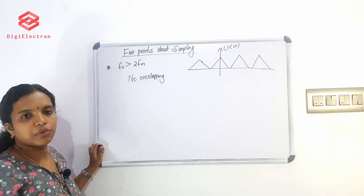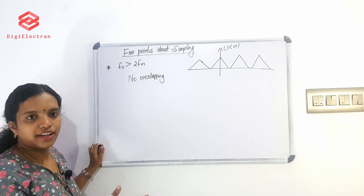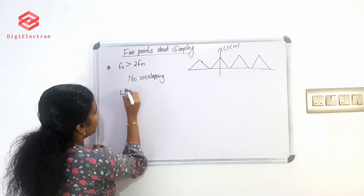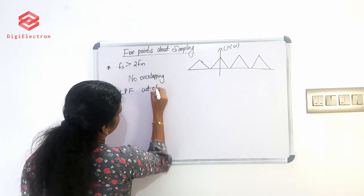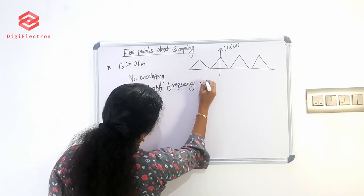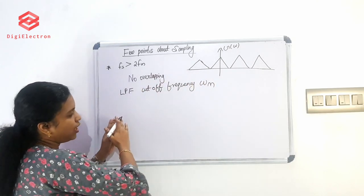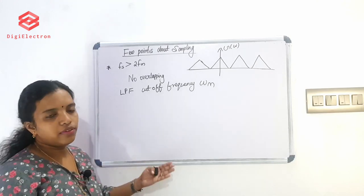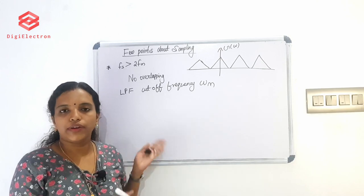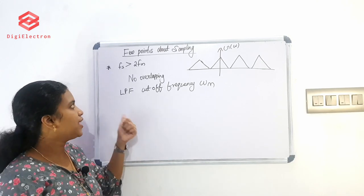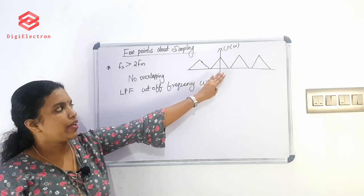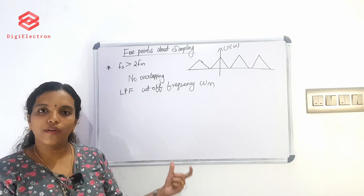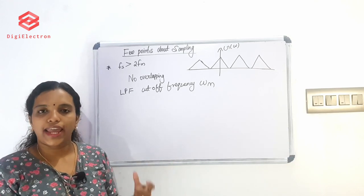What we need to do is ensure no overlapping in the spectra. For the original signal x(omega) or x(t), we use a low-pass filter with cutoff frequency at Fm. Frequencies below Fm pass through; frequencies above Fm are rejected. When Fs > 2Fm, the spectral copies repeat periodically with no overlapping, making it easy to recover x(omega) using the low-pass filter.